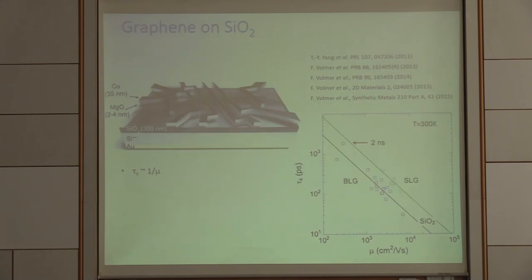If one is doing such experiments on many samples, and is now plotting the spin lifetime which one can extract as function of the carrier mobility, which we can also measure, then this was one of the very first plots which was generated in Aachen. At this time, this was a collaboration with the group of Barbaros Össilmas in Singapore.